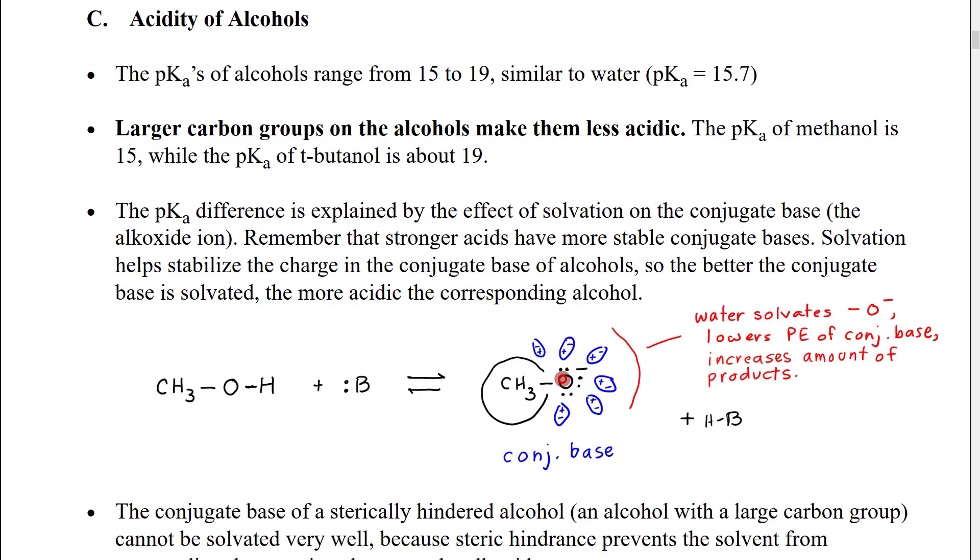What this does is it essentially kind of spreads that negative charge out in space, since in this region it's reduced by the charge balance, and then out here you have the negative charge. This lowers the potential energy of this species. We also, just to make the reaction complete, I want to point out that we do have a conjugate acid of our base, but we're going to focus on this conjugate base.